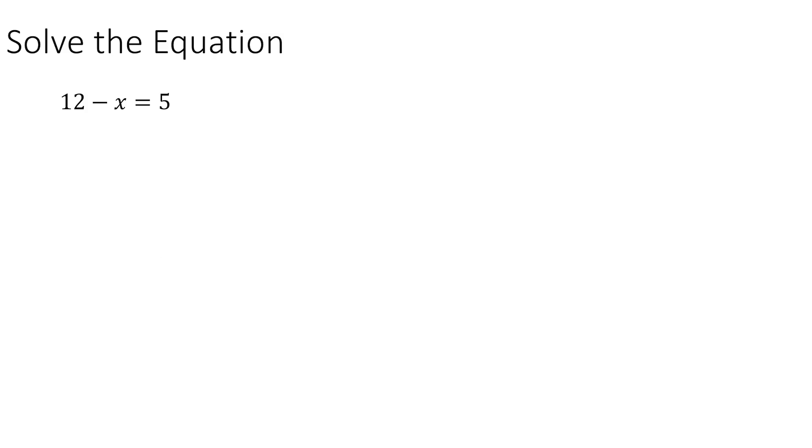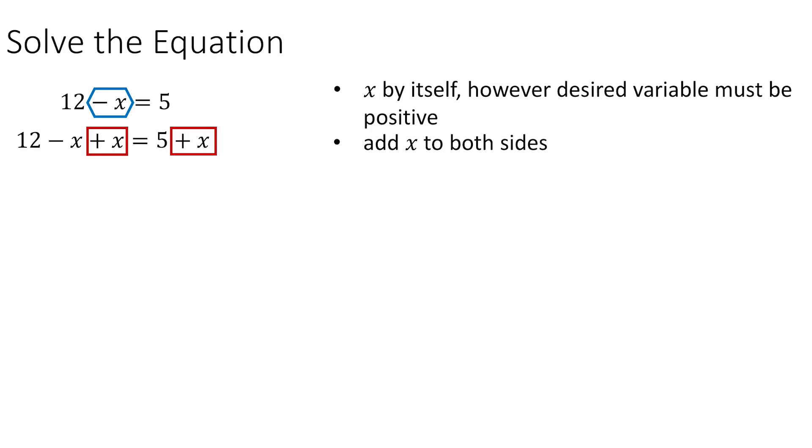In this next example, we have 12 minus x is equal to 5. There's two ways we're going to look at doing this one. The first way is to move the x over to the other side, because right now we're dealing with a negative x, and when we solve an equation for that variable, we do need the x to be positive overall. So what we're going to do is add x to both sides. Adding x on the left will cancel out the x's there, and then adding an x on the right-hand side will give us the positive quantity that we want.